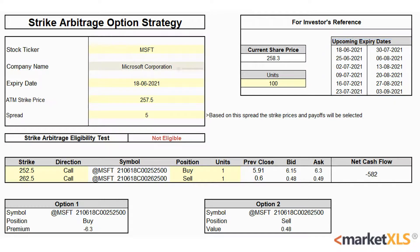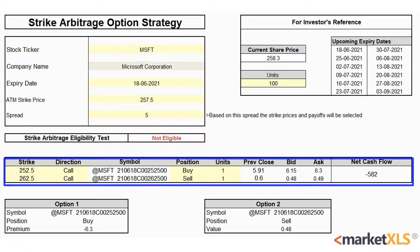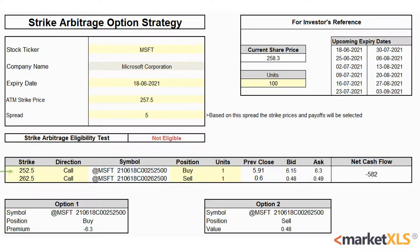For the purpose of this video, we'll be using Microsoft with an expiry date of 18 June. Our spread is 5, so we'll buy an in-the-money call at the 252.5 strike and sell an out-of-the-money call at the 262.5 strike. We can observe the net cash outflow on the right. The Strike Arbitrage eligibility test will help the user identify whether a Strike Arbitrage opportunity is possible in a given scenario.